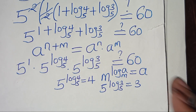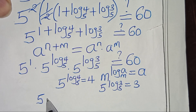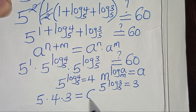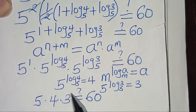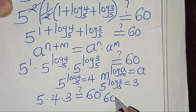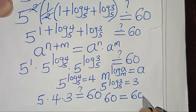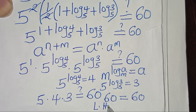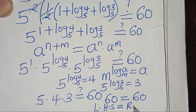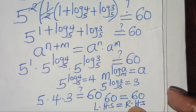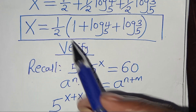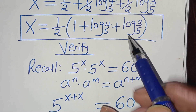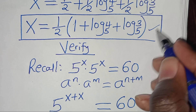So substituting this, here we have 5 multiplied by 4 times 3, which is supposed to give us a value of 60. So 5 times 4 is 20, times 3, this is equal to 60, which is equal to 60. This implies that the left-hand side is equal to the right-hand side, and this confirms that the value of x, which is equal to 1/2 into the parenthesis 1 plus log 4 to base 5, plus log 3 to base 5, satisfies the equation.